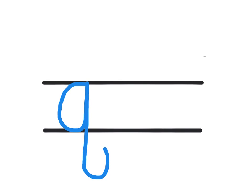For the Q, you're going to make a magic C. You're going to come up, you're going to go straight down, but you're going to make a U-turn, aim for the corner, and travel away.